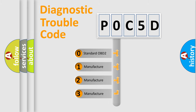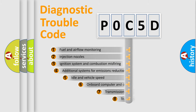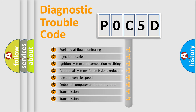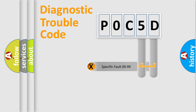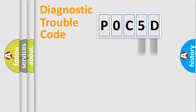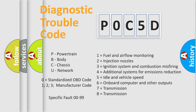If the second character is expressed as zero, it is a standardized error. In the case of numbers one, two, or three, it is a manufacturer-specific expression of the car error. The third character specifies a subset of errors. This distribution is valid only for the standardized DTC code. Only the last two characters define the specific fault of the group. Such a division is valid only if the second character code is expressed by the number zero.